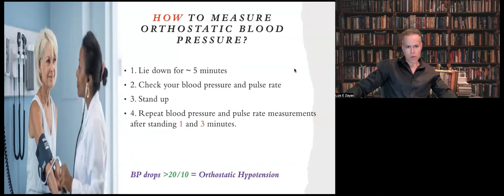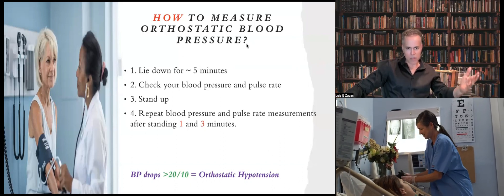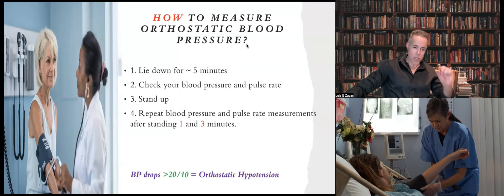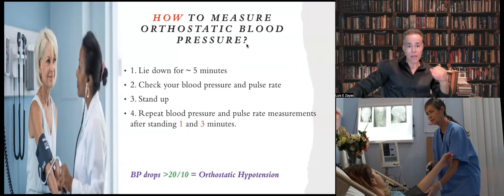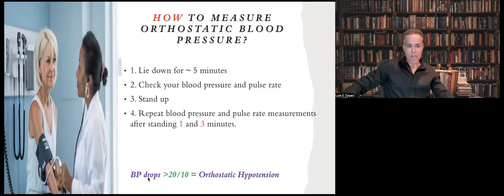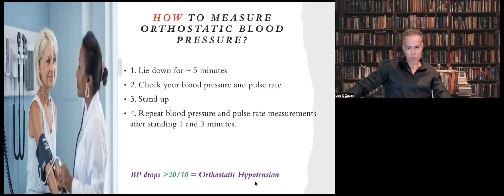How do you check for orthostatic hypotension, or how do you check orthostatic blood pressure? The first thing is you need to be relaxed. You need to lie down first, resting for at least five minutes. Then check the blood pressure — someone needs to help you with this. Check the blood pressure while lying flat and also the pulse. Then stand up, wait one minute, and check the blood pressure and pulse again in the standing position. Write it down, then check the blood pressure again at three minutes. If you have a drop of 20 in the systolic blood pressure or a drop of 10 in the diastolic blood pressure, that means you have orthostatic hypotension.